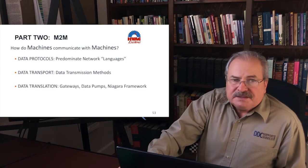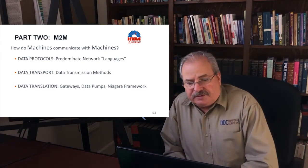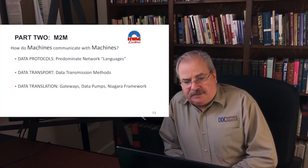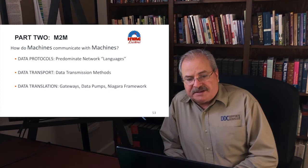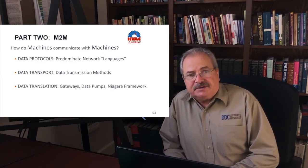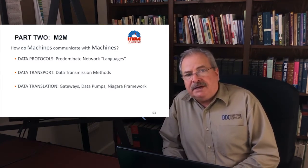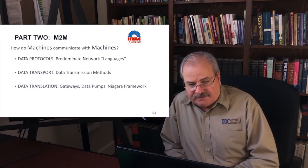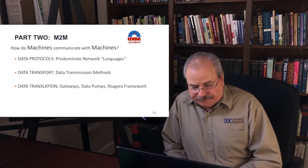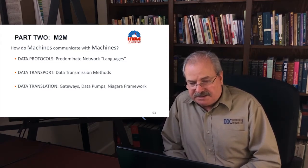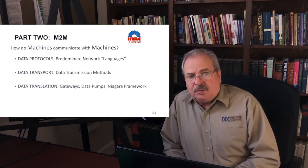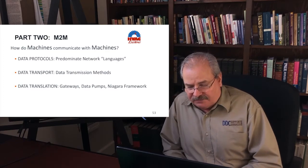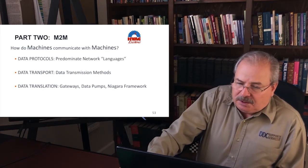Data protocols basically has to do with the various different predominant languages that are used. Data transport has to do with transmission methods — how do we get from point A to point B, and what type of network infrastructure do we need? Data translation involves things like gateways, data pumps, hardware and software platforms — one being the Niagara framework, which we will look at a little bit more later.